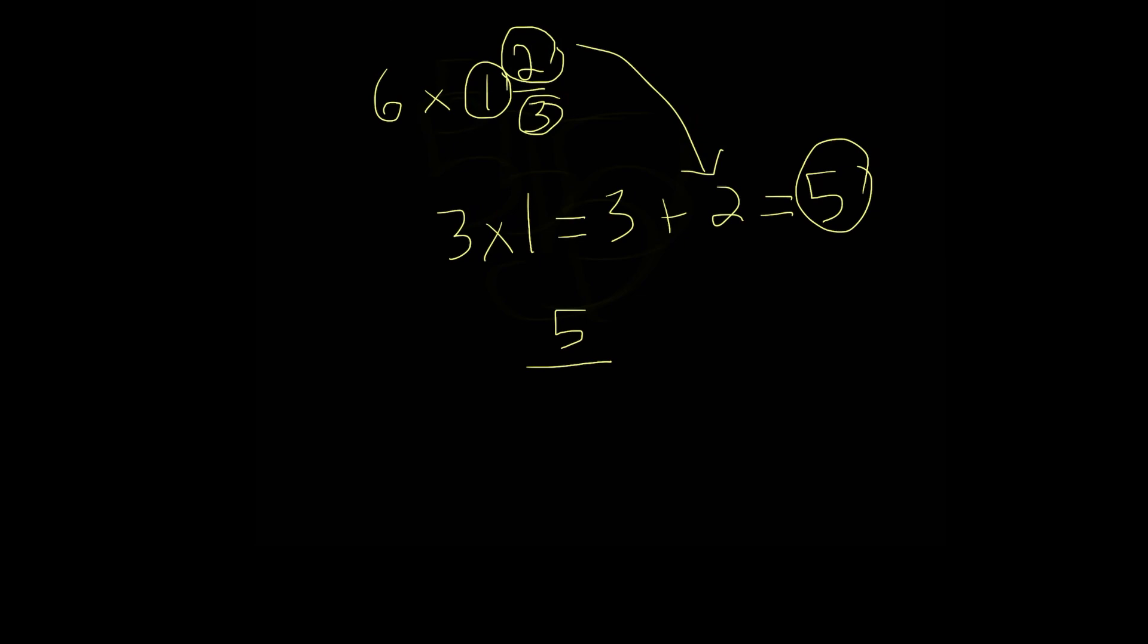So we could write 5 over here, and then we actually keep our denominator the same. So we could just bring this 3 down right here because we don't do anything to it. We keep it the same.